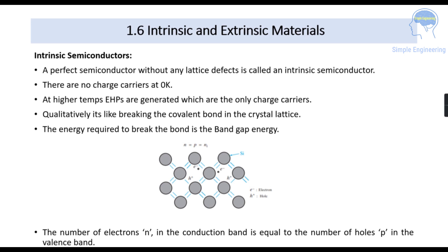Intrinsic Semiconductor: A perfect semiconductor without any lattice defect is called an intrinsic semiconductor. At 0 Kelvin, that is low temperature, there are no charge carriers. When the temperature starts increasing, electron-hole pairs are created, which are the only charge carriers, and this is likely to break the covalent bond in the crystal lattice. The energy required to break that bond is called the band gap energy. In this picture you can see the silicon atom in covalent bond with other atoms. E represents electrons and H-plus represents holes.